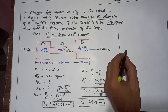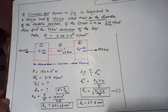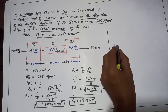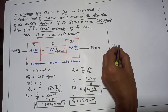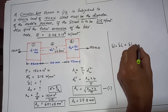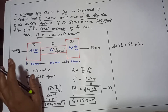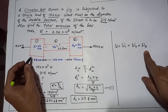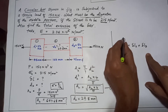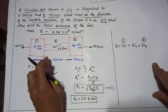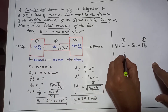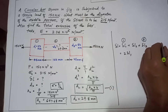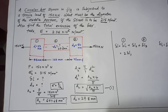Now we will calculate the total extension. Total extension delta L equals delta L1 + delta L2 + delta L3. Since the lengths of element 1 and element 3 are the same, we can write delta L = 2 × delta L1 + delta L2. The formula for extension is delta L = PL / AE. Since lengths 1 and 3 are equal, delta L1 equals delta L3.